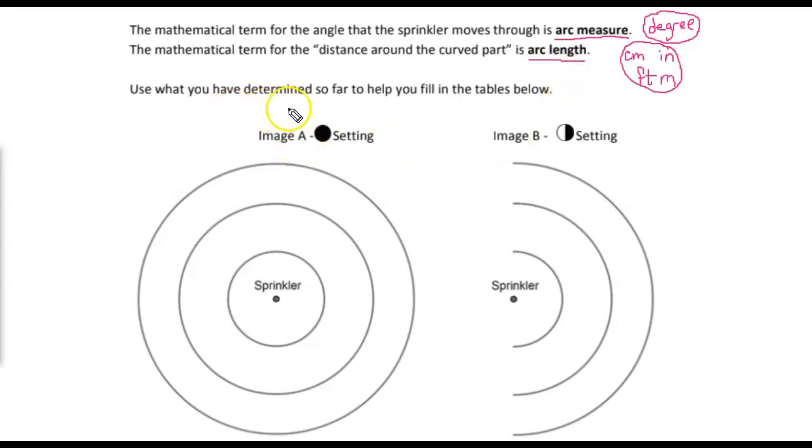Now, in your task, you have a table. And so when we are looking at these pictures, we want to fill out the table with what would be the arc measure and what would be the arc length. If we look at the full setting, going all the way around, and we had three different sprinklers with three different radii.